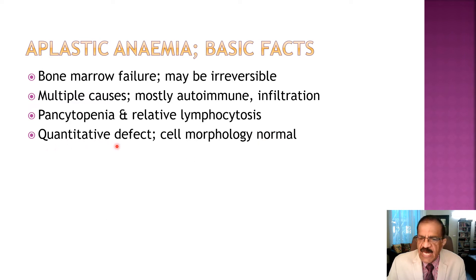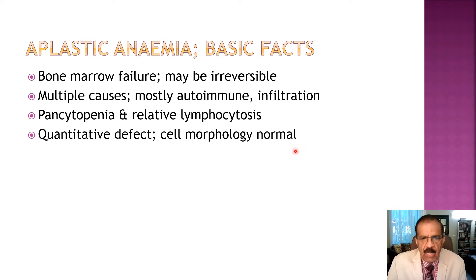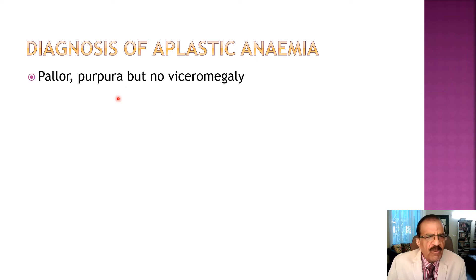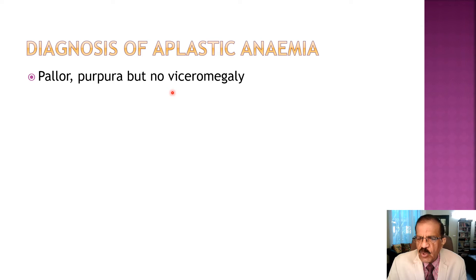Aplastic anemia is a quantitative defect - RBCs are not produced in sufficient quantity, but whatever RBCs are produced and released into circulation are of normal morphology: normochromic and normocytic. Diagnosis is possible on peripheral blood examination, but usually requires bone marrow examination. Symptoms are similar to any anemia - pallor - but because of thrombocytopenia the patient may also have purpura. Importantly, there is usually no visceromegaly in the autoimmune type of aplastic anemia.